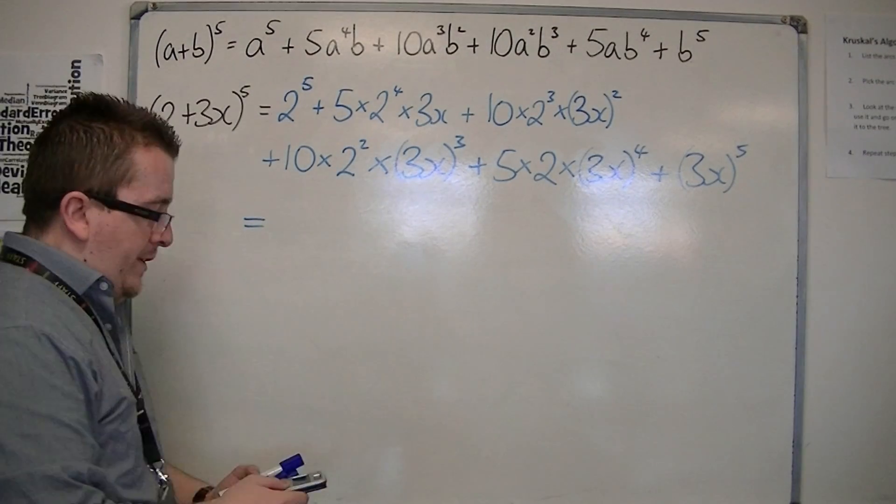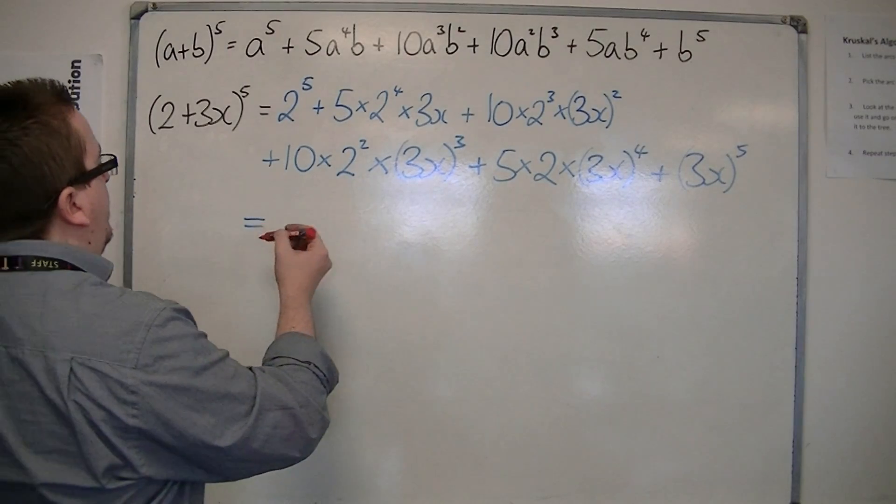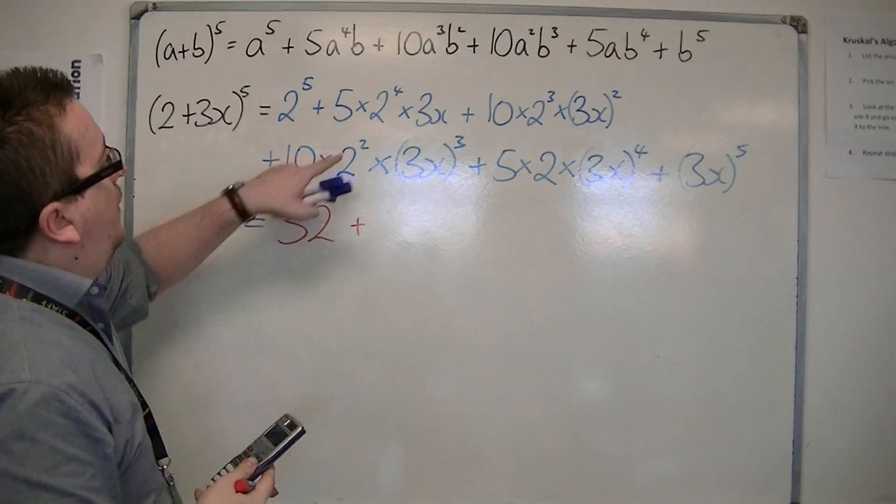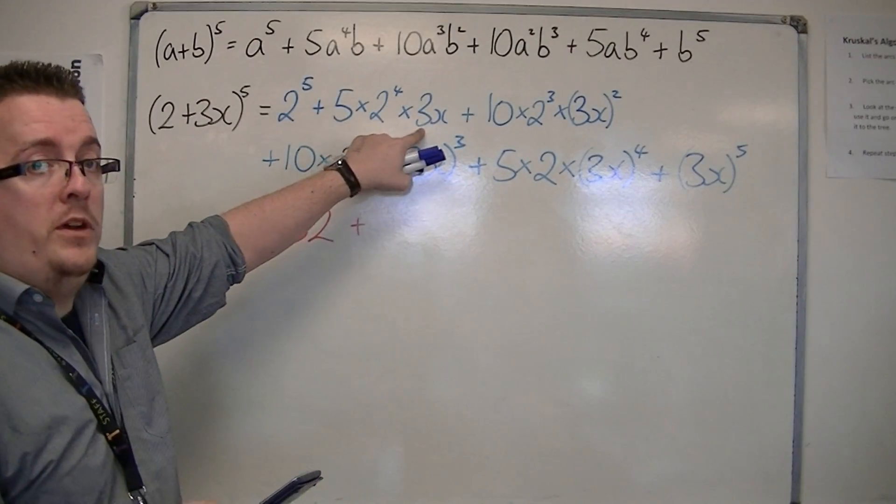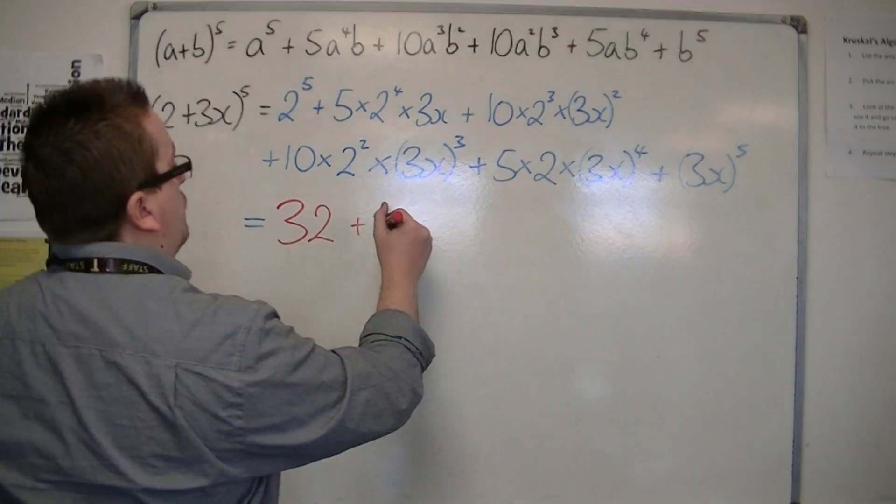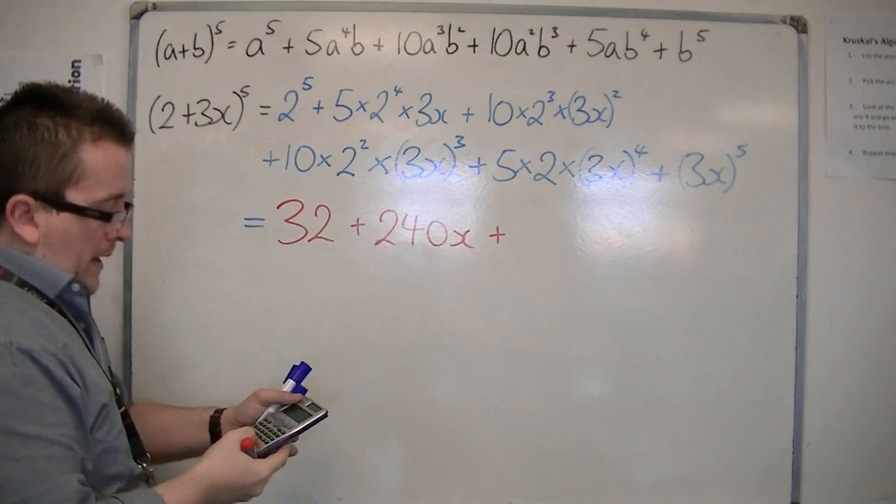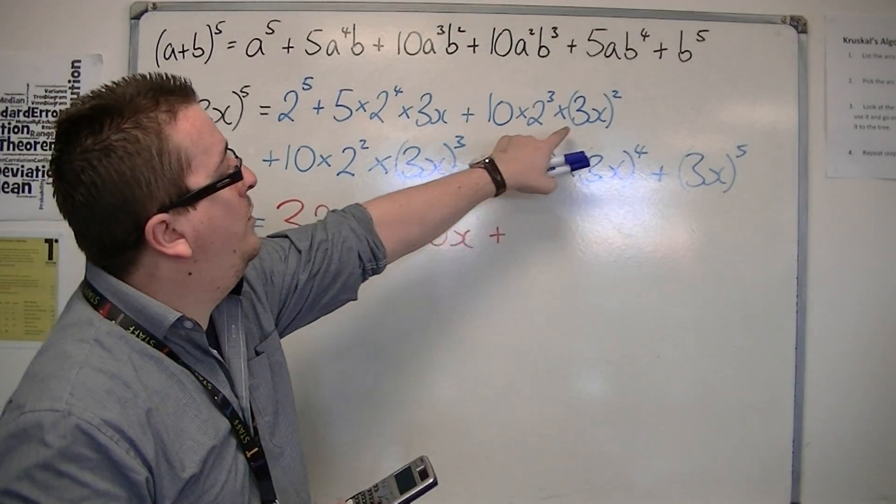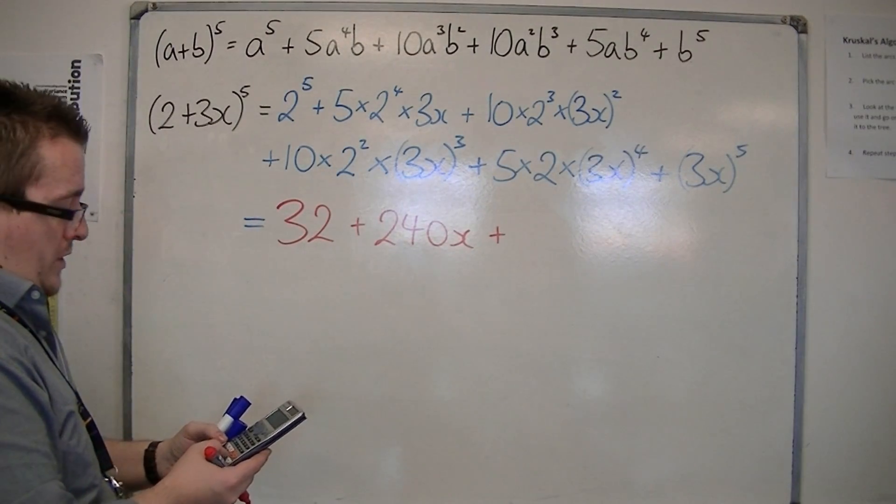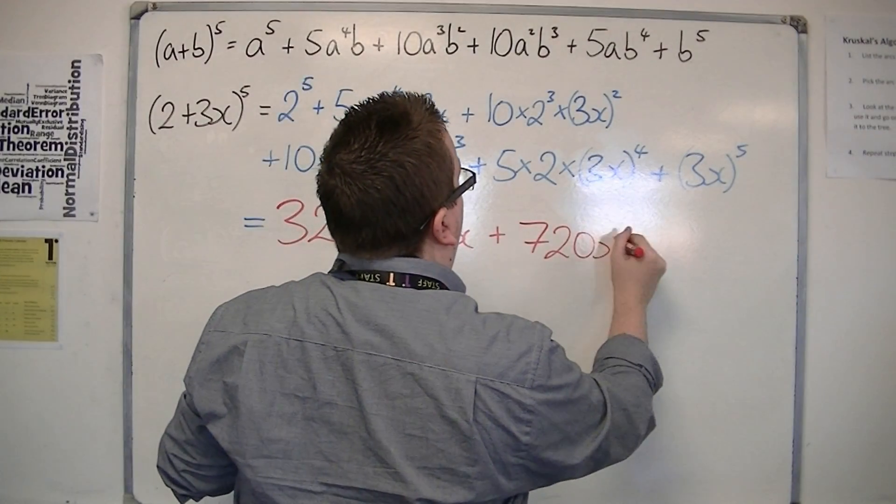So plugging this into your calculator, we have 2 to the power of 5, which is 32. We've got 5 times 2 to the 4 times 3, so 5 times 2 to the 4 times by 3 is 240x. Plus 10 times 2 cubed times 3 squared, so 10 times 2 cubed times 3 squared is 720x squared.